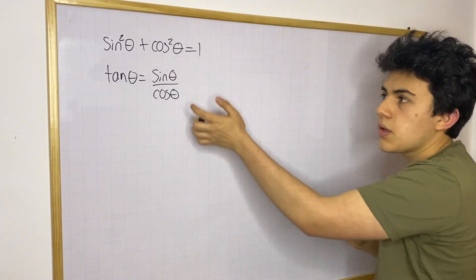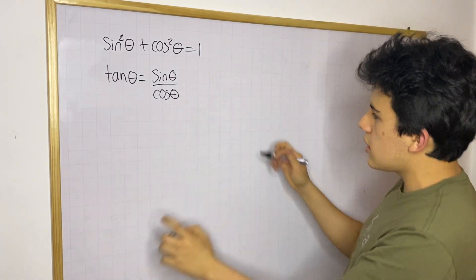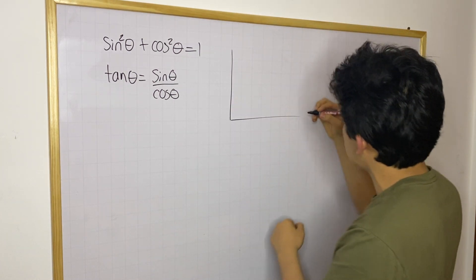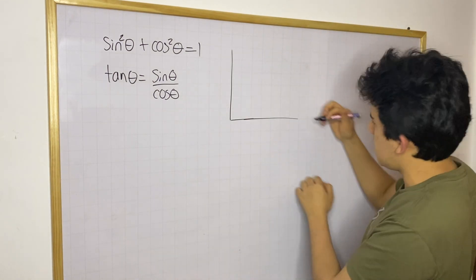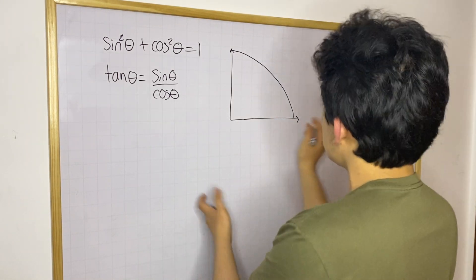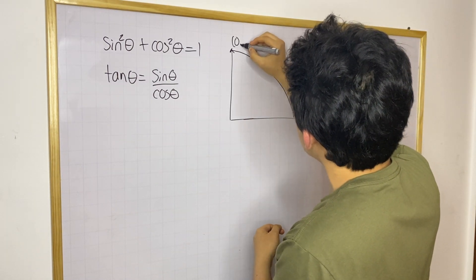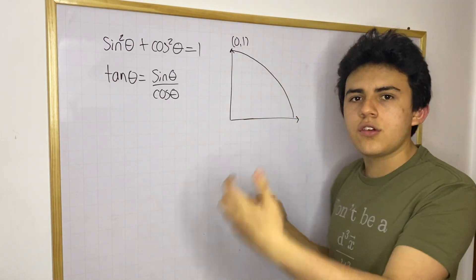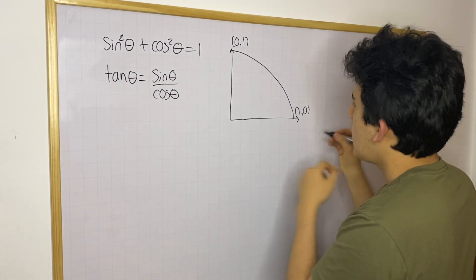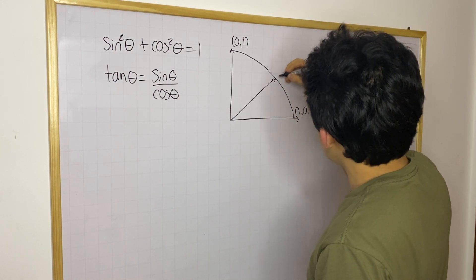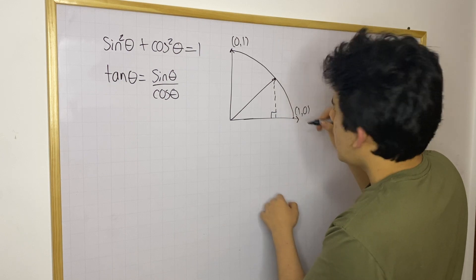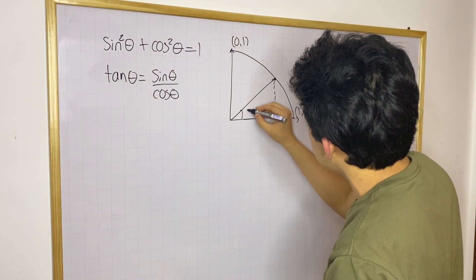To prove these identities we need to go to the unit circle. I'm not going to draw the entire circle — I'm only going to draw the positive quadrant. We know that on the unit circle we have a quarter of a circumference. The point at the top is (0, 1), the point to the right is (1, 0). Now say you have a line that goes and touches a point on the circumference, giving you a right triangle.